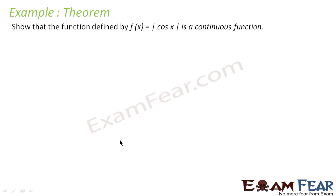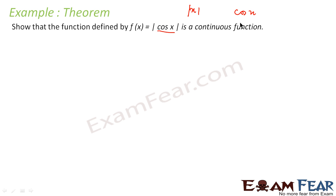Let's take the example f(x) = |cos x|. This looks like a difficult or terrifying question because it involves cos x and also a modulus. I don't know whether |cos x| is a continuous function or not, but I know that |x| is continuous and cos x is also continuous.